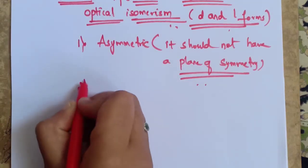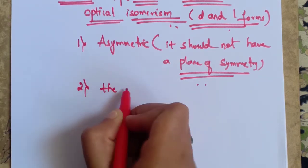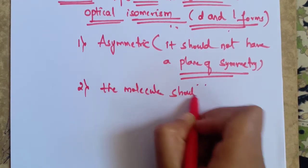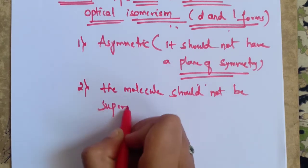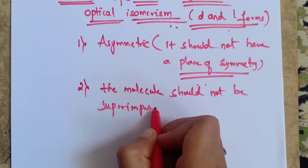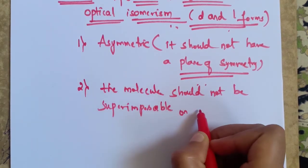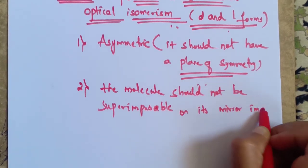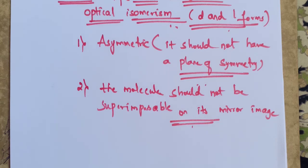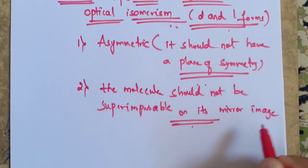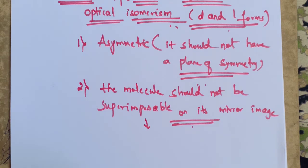The second important condition is the molecule should not be superimposable on its mirror image. When the molecule is cut into two halves, the two structures should not be superimposable. The molecule should not be superimposable on its mirror image — its image and its mirror image should not be the same. It should be non-superimposable to its mirror image. Then it is said to have optical activity, and they are said to be optical isomers existing in D and L forms. These are the conditions for a molecule to show optical isomerism.